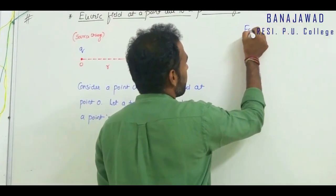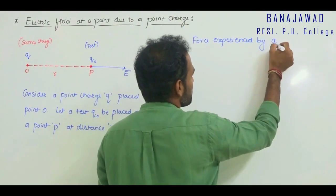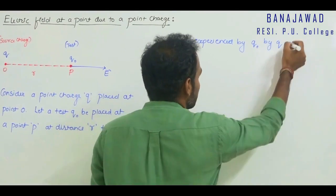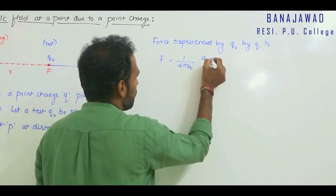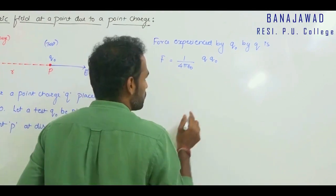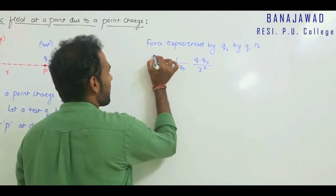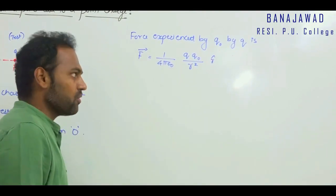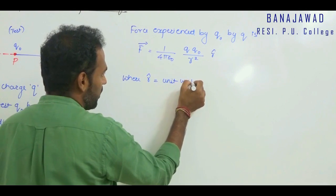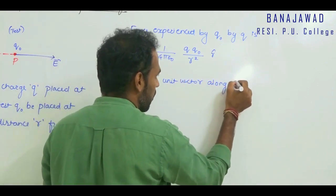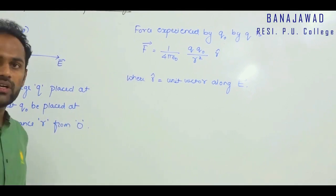The force on test charge Q₀ due to Q is given by Coulomb's law: F = (1/4πε₀) × (Q × Q₀) / R². The two charges are Q and Q₀, and R is the distance between them. In vector notation, we can write vector F = (1/4πε₀)(Q × Q₀ / R²) R̂, where R̂ is the unit vector along the direction of the electric field. This is the force between the two charges Q and Q₀.